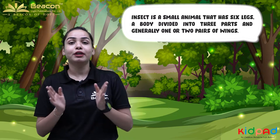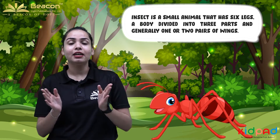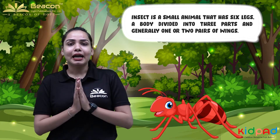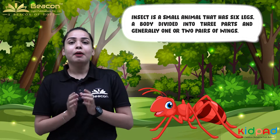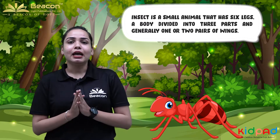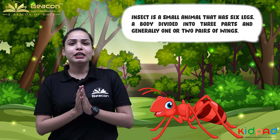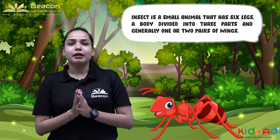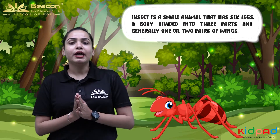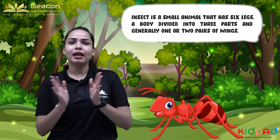For example, an ant — you have ever seen an ant. An ant's body is divided into three parts and it has six legs. Generally, insects have one or two pairs of wings.